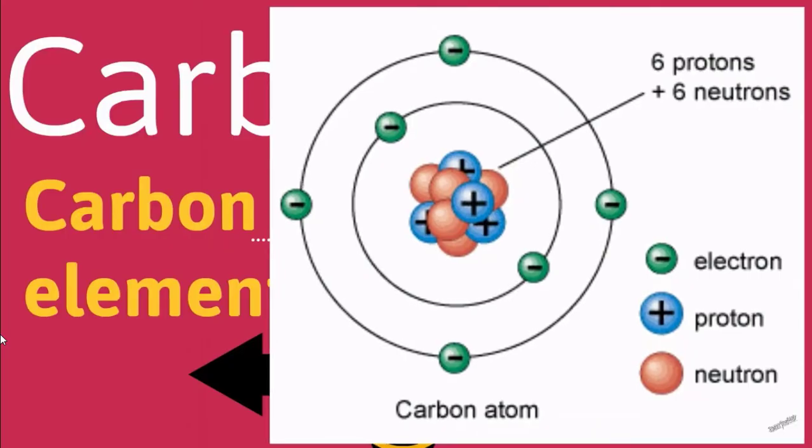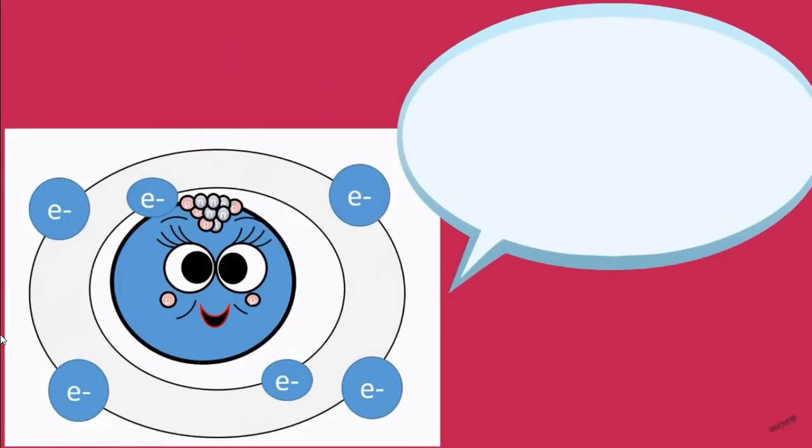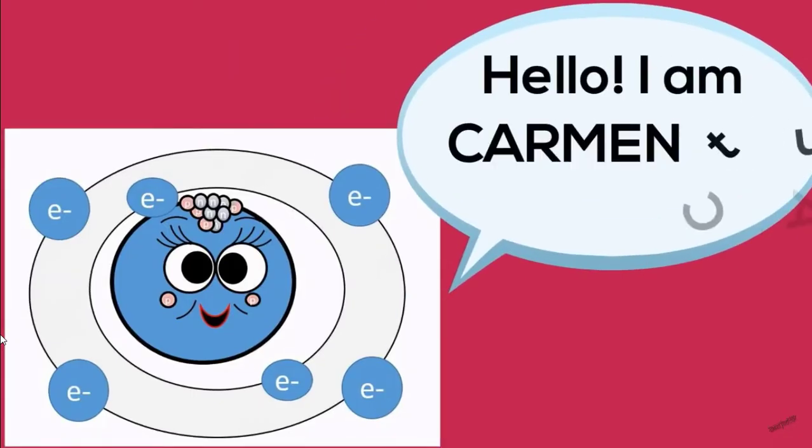Carbon has six protons, six neutrons, and six electrons. Hello, I'm Carmen the Carbon.